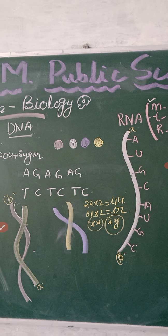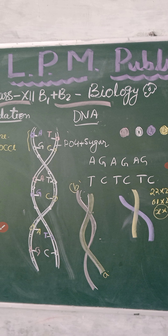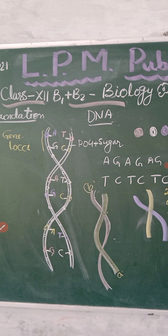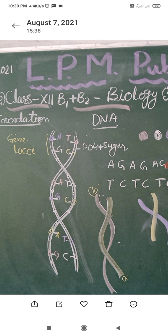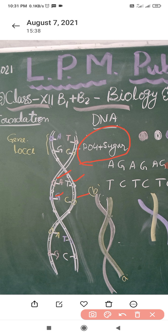Today I will cover DNA and RNA. These are biomolecules. DNA is known as deoxyribonucleic acid, and its double helix model was discovered by Watson and Crick. According to them, this DNA is made up of a double helix which consists of phosphate and sugar. This phosphate and sugar form the skeleton of the DNA.